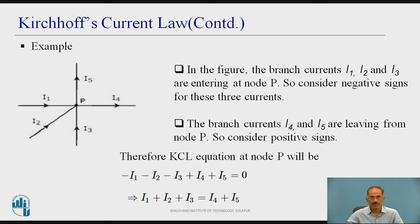For example, we can see this figure, there is a node P and currents I1, I2, I3 and I4 are connected to the node. Either it may enter to the node or leaving the node. In the figure, the branch currents I1 and I2, I3 are entering at node P. So, we need to consider negative signs for these currents.